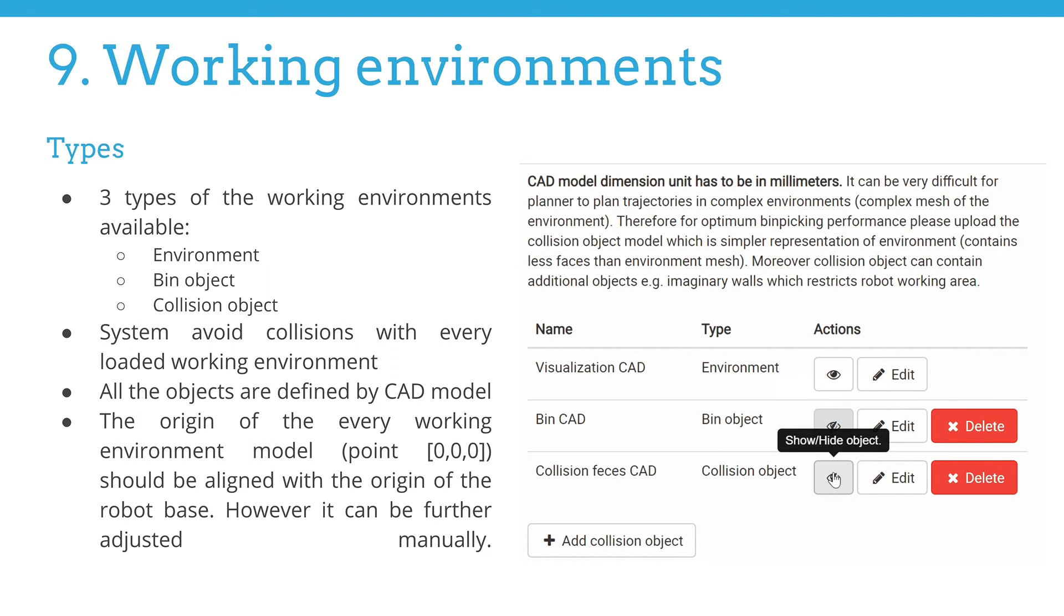Let's start with the categorization of the working environments. We support three types of working environment: environment, bin object, and collision object. Please do not get confused by the last type mentioned. Every single type loaded will be considered by the robot as an obstacle and any collision with it will be avoided in order to prevent damage.